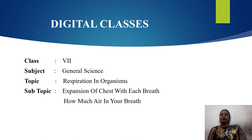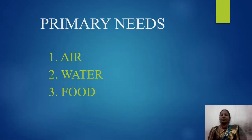Children, what are the primary needs for us? We know that there are three things that are very useful to us. The first one is air, second one is water, third one is food.